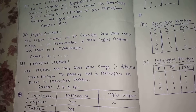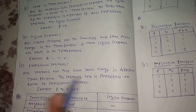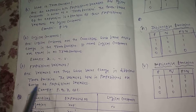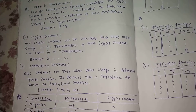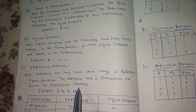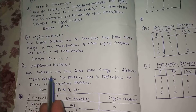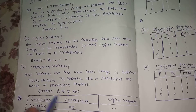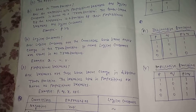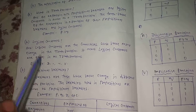Propositional variables are those whose values change in different truth functions. The value of variables changes in different truth functions. The variables used in propositions are known as propositional variables. For example, P, Q, R, etc.